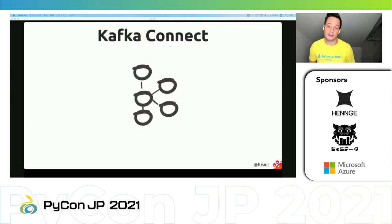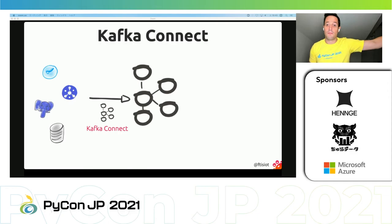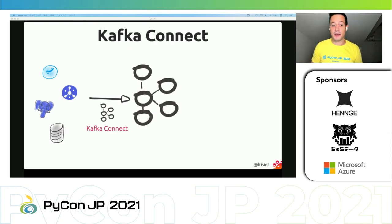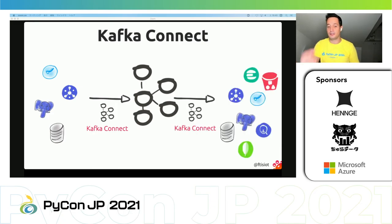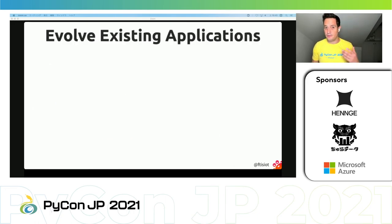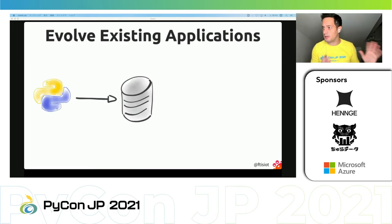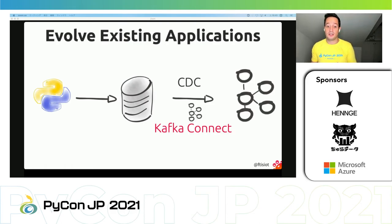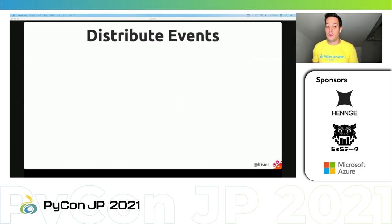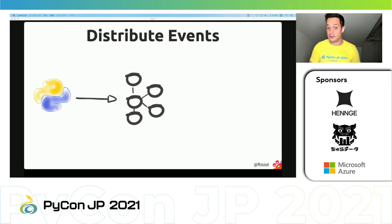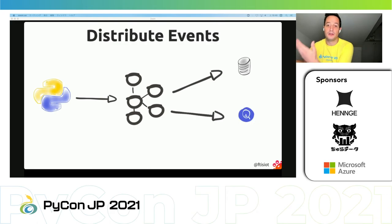Fortunately, there's Kafka Connect — a pre-built framework that lets you say 'I want to take data from this Postgres database, this Cassandra, or Google Pub/Sub' and Kafka Connect will take the data in streaming mode and push it to a Kafka topic. Similarly, if data is in a Kafka topic, you can use Kafka Connect to push it into Elasticsearch, Postgres, or Amazon S3 for long-term storage. Kafka Connect allows you to evolve existing applications — if your app was talking directly with a database, you can adopt Kafka Connect with change data capture to move all changes to Kafka in streaming mode without changing your existing design. It also allows distributing events to multiple destinations simultaneously — BigQuery for analytics, S3 for long-term storage, and more.